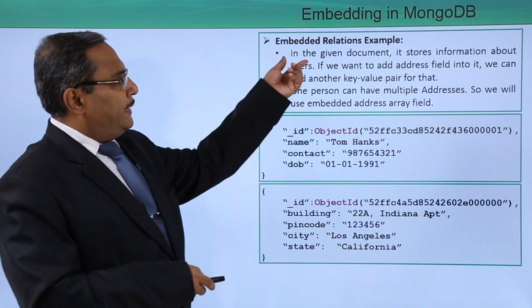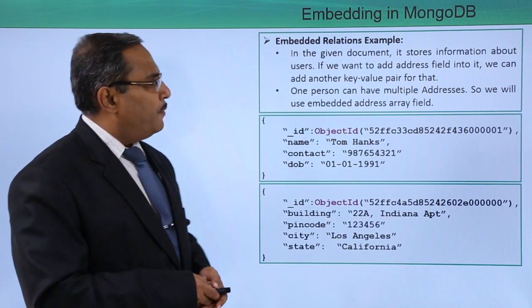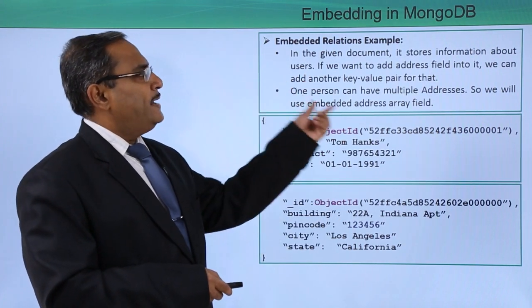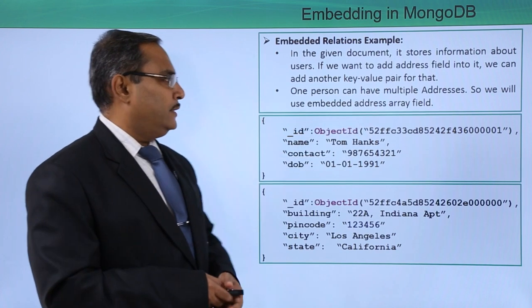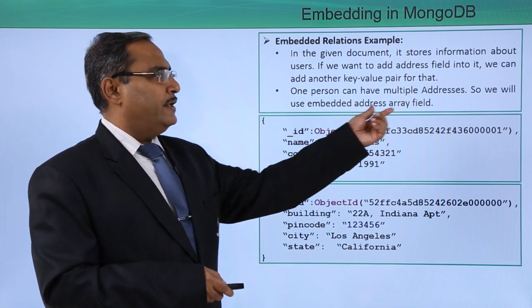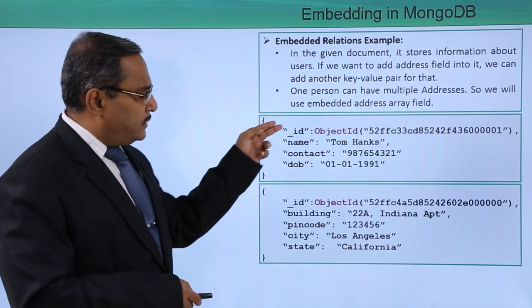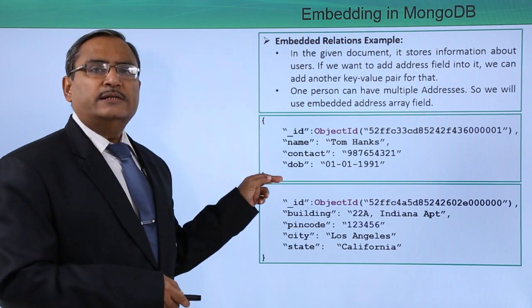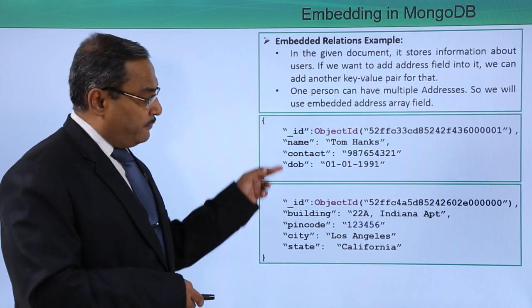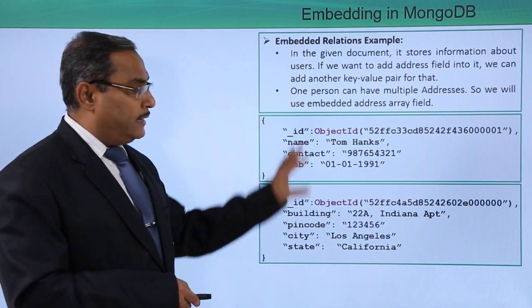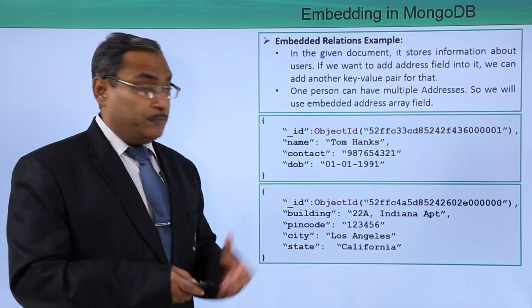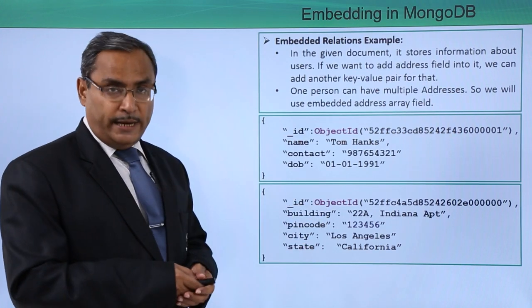For another embedded relations example: in a given document that stores information about a user, if we want to add an address field, we can add another key-value pair for that. Since one person can have multiple addresses, we will use an embedded address field. We can see that one address is one JSON object, another address is another JSON object — so we are having two discrete JSON objects. Since a person can have multiple addresses, how do we represent this using embedding in MongoDB?